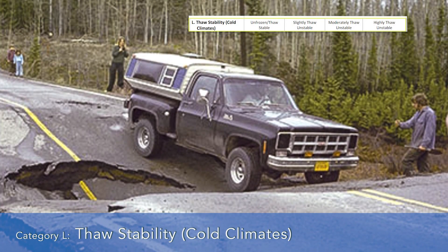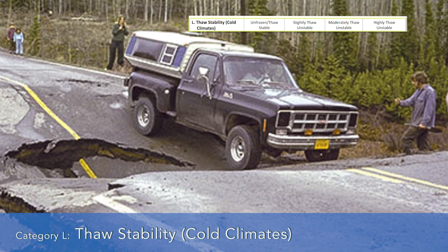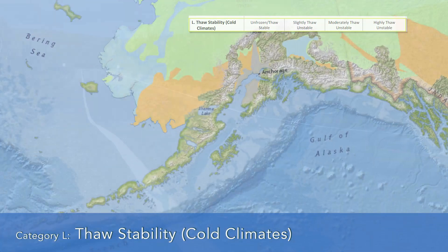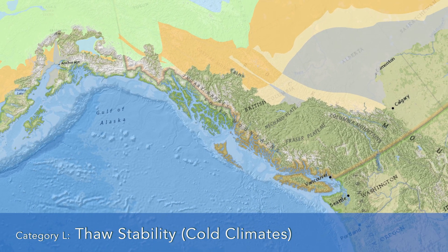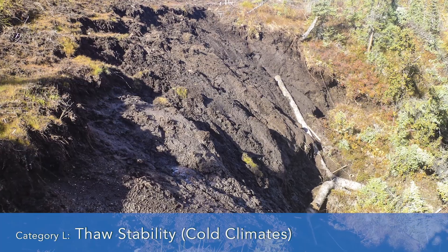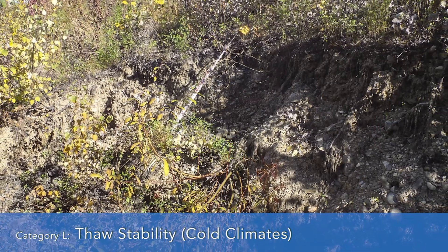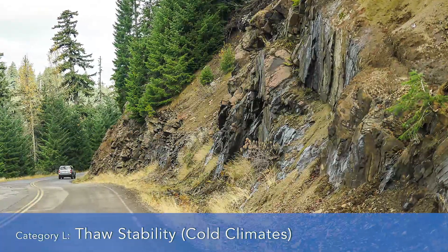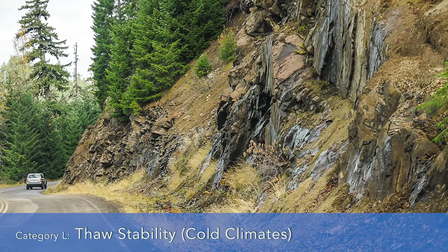Category L, thaw stability, is the first of the landslide effects in the slope hazard rating. This ranges from a category of three for unfrozen or completely thaw stable slopes all the way up to a score of 81 for highly thaw unstable slopes. The 81 category would be mostly in very northern climates like Alaska or in very high mountainous terrain in the northern states. Where geologic materials are mixed with thin ice lenses and well-drained materials, you may be in the slightly thaw unstable category. Here in southwest Washington, we do not have any permafrost issues on these roads, so we'll grade this as thaw stable, category three.